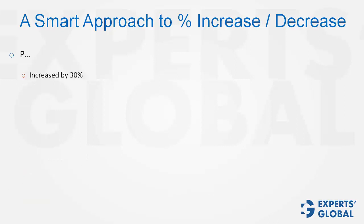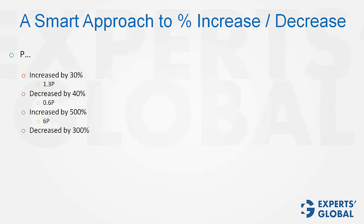p increased by 30% becomes 1.3p; decreased by 40% becomes 0.6p; increased by 500% becomes 6p; decreased by 300%, so p minus 3p becomes minus 2p.